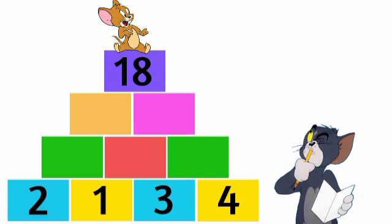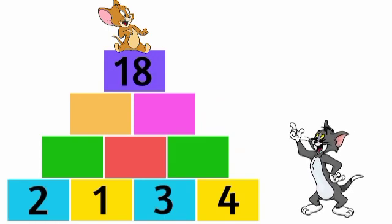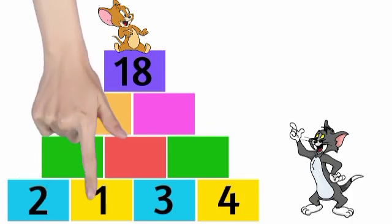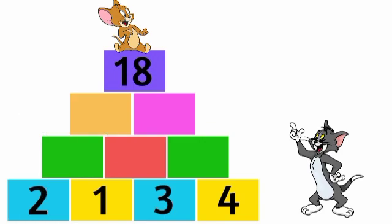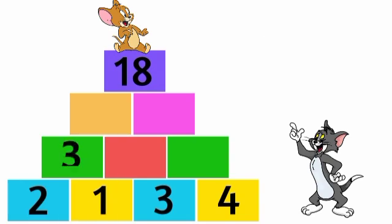See, there are some numbers in first line boxes. Now, Tom is taking the first two boxes. So, here is 2 plus 1 equal to 3. Now, Tom is writing 3 over here.